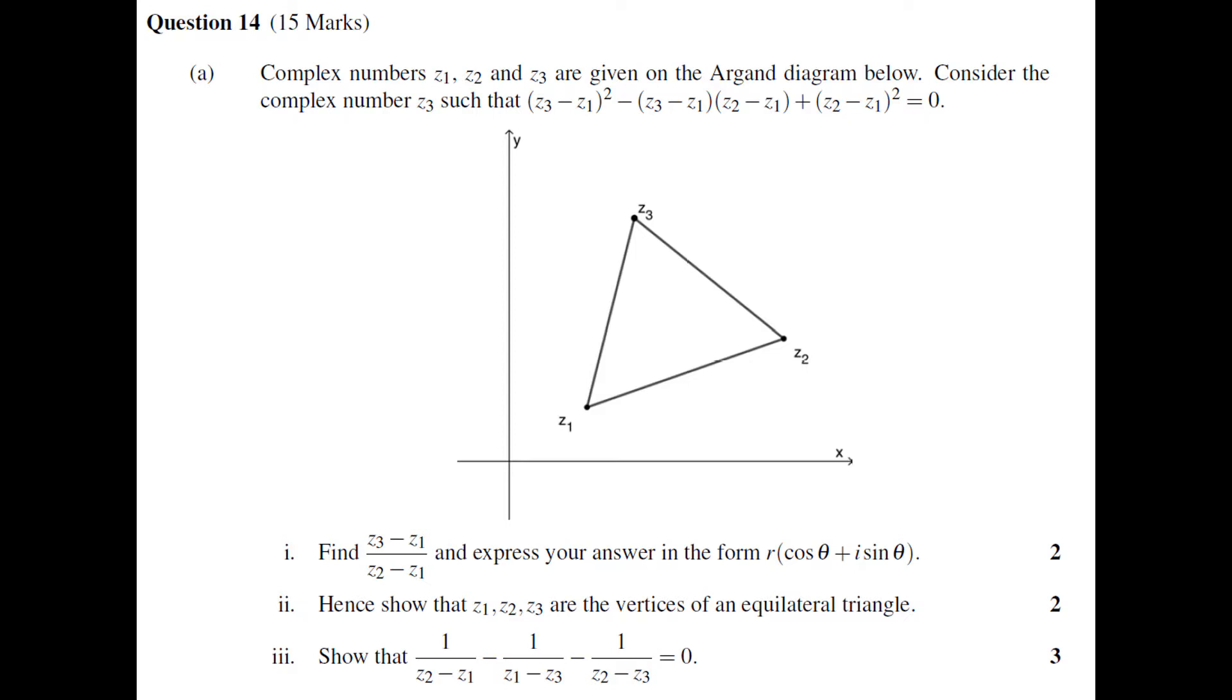This question has three sub parts. We're told that we have complex numbers Z1, Z2, and Z3 given on this Argand diagram. We're told to consider the complex number Z3 such that (Z3 minus Z1) squared minus (Z3 minus Z1)(Z2 minus Z1) plus (Z2 minus Z1) squared equals zero. That's essentially a result that we can rely on.